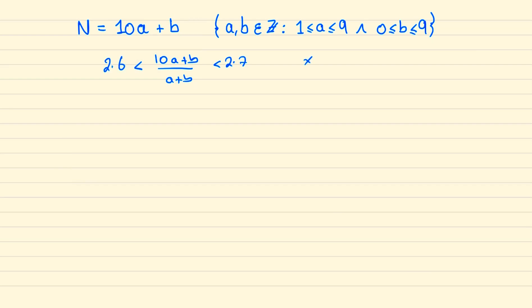If we multiply everything by 10a plus b then we have 26a plus 26b is less than 100a plus 10b which is less than 27a plus 27b.